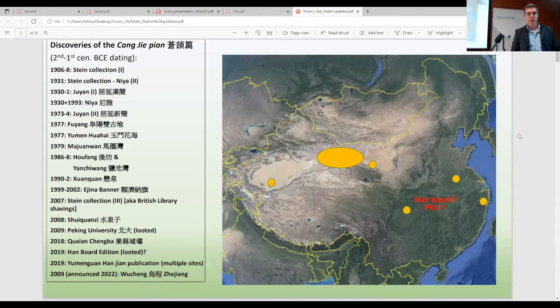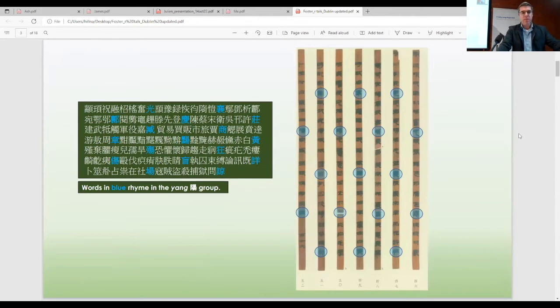Another aspect of this corpus that I think is really useful is that these primers tend to be based on structural rhymes. The organizing logic behind what are ultimately just a list of random terms isn't so much the content. There is sort of clustering of semantic relationships, but it's rhyming. So in particular, with the Cang Jie Pian, each chapter will participate in a single rhyme scheme.